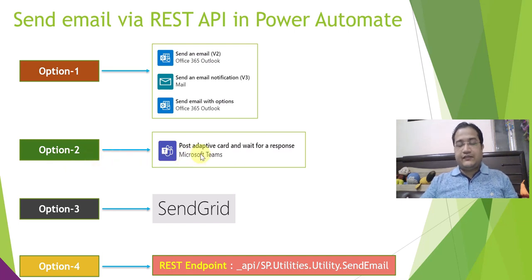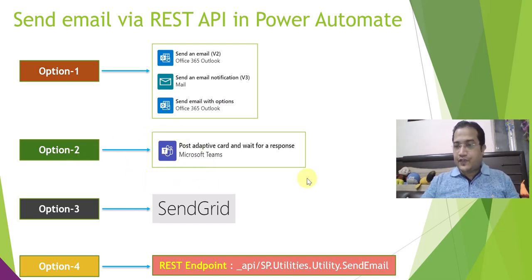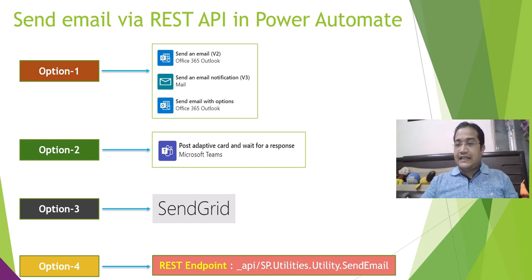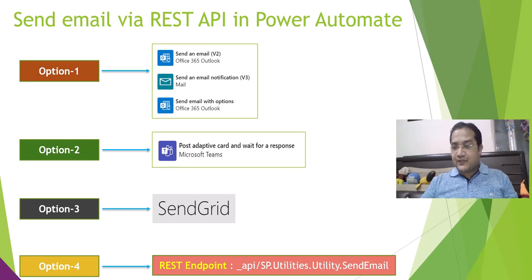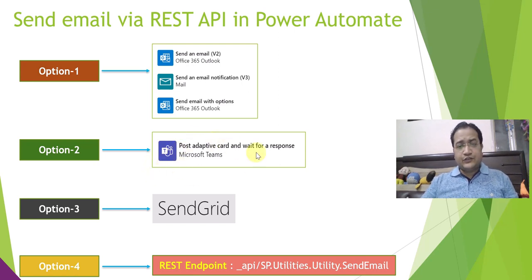Option two is you can post adaptive cards in MS Teams. This scenario comes into picture when you are working on multiple-level approval workflows. You want to post an adaptive card in MS Teams for the approvers so that within MS Teams itself, they can approve, reject, or precisely take a decision on the request submitted by the user. Instead of sending an email, you can post an adaptive card and wait for a response in MS Teams.